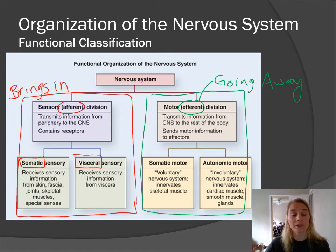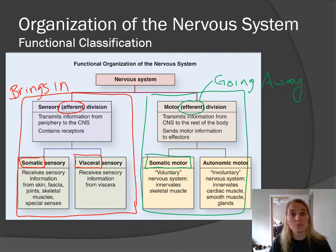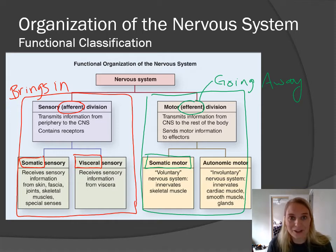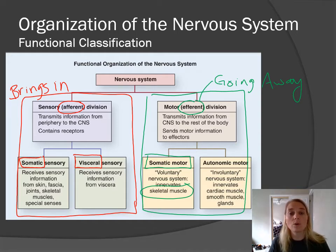Think of effector — like muscles — they are the receivers of this efferent information. We have that somatic word again. Somatic in this case, since it's dealing with action, refers to motor commands — somatic motor — these are the voluntary things that you can do. The only effector that you can consciously control is skeletal muscle. You have no conscious control over smooth muscle, cardiac muscle, or glands. They're running on autopilot. So somatic motor is the only thing you have conscious control over as far as motor commands.